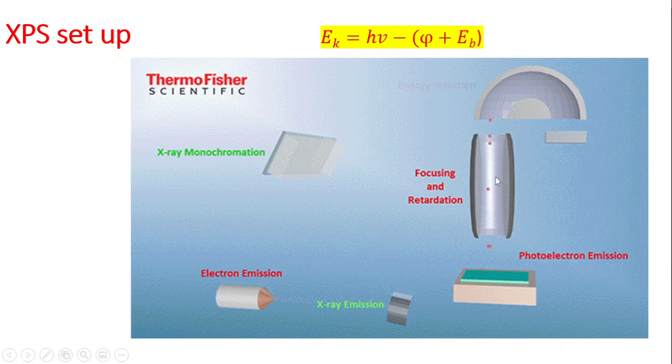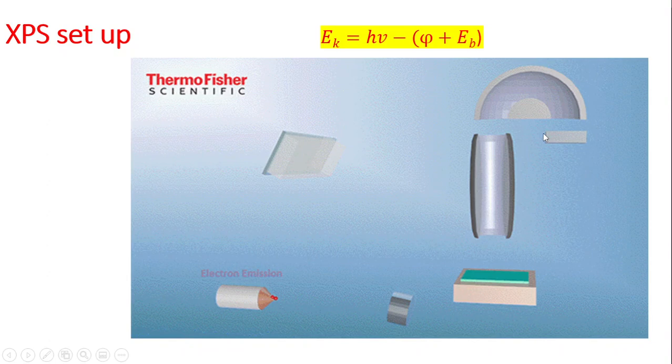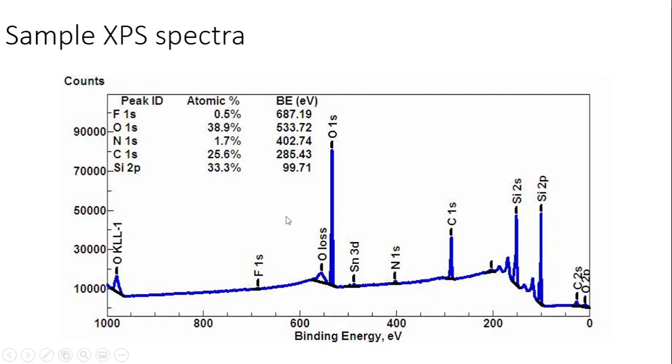A typical XPS spectrum has binding energy or kinetic energy on the x-axis and intensity or counts per second on the y-axis. The peaks are specific and unique to the elements in your sample. For example, this sample shows fluorine 1s, oxygen 1s, nitrogen 1s, carbon 1s, and silicon 2p.